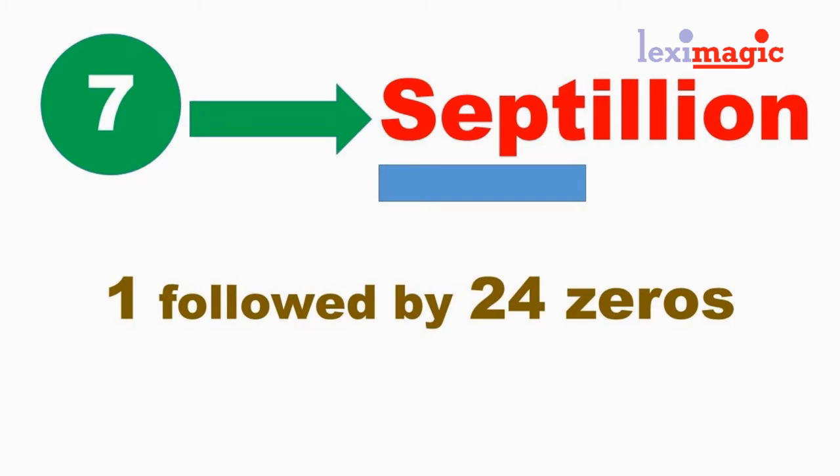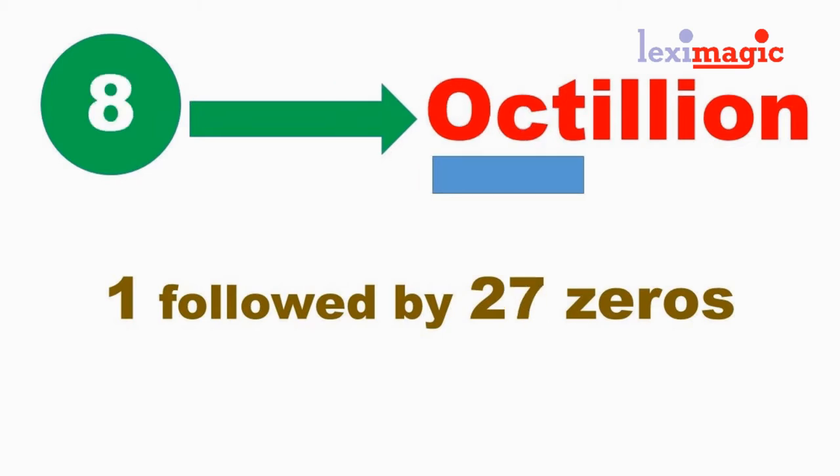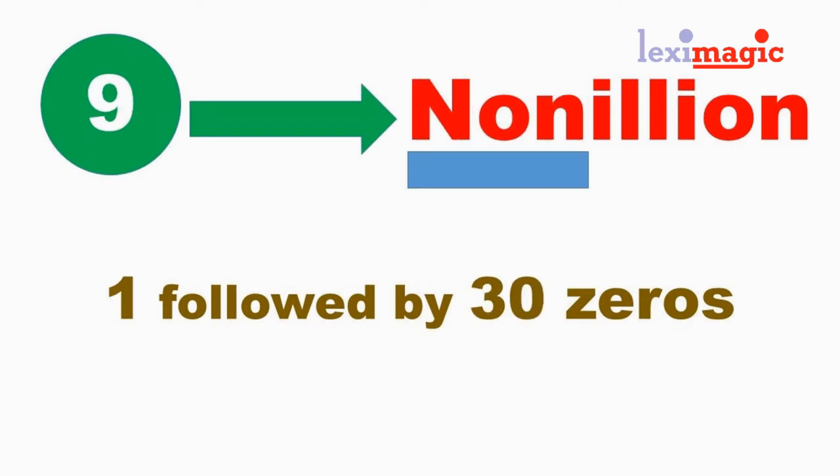And then we go to the septillion, which has one followed by 24 zeros. The octillion, one followed by 27 zeros, and the nonillion, one followed by 30 zeros.